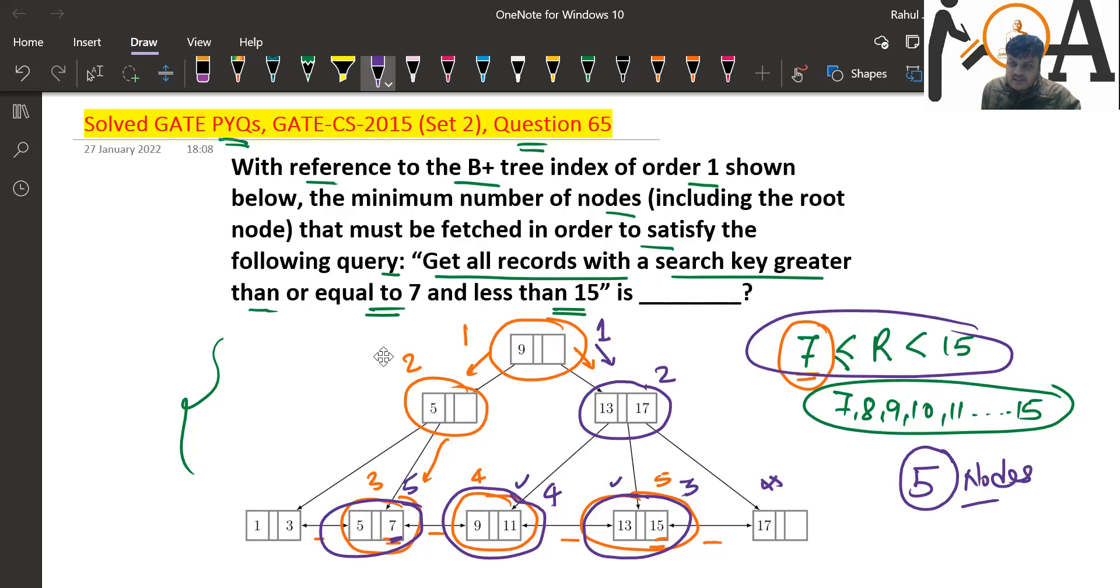Ultimately, the minimum number of nodes that must be fetched in order to satisfy this query is 5. So very simple question. I hope it is clear to everyone. If anybody having any kind of doubt or confusion or query, you can ask me here. Thank you so much guys. Do subscribe for more such questions and more such videos. Have a very nice day. Jai Hind.